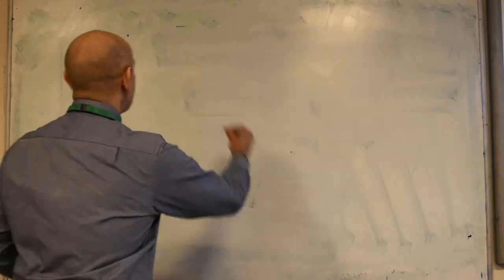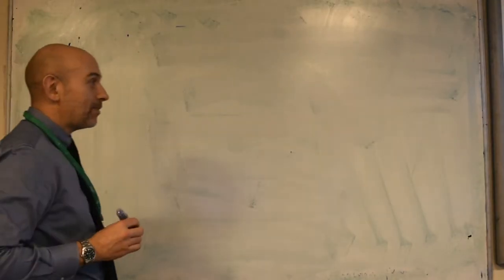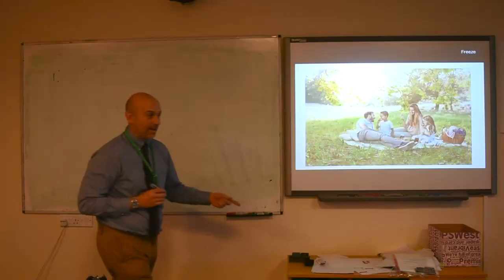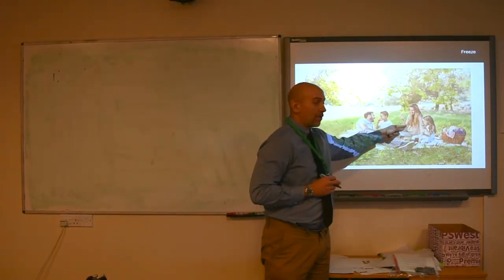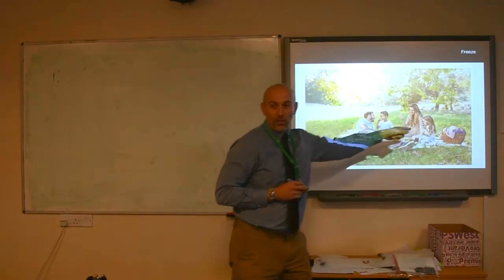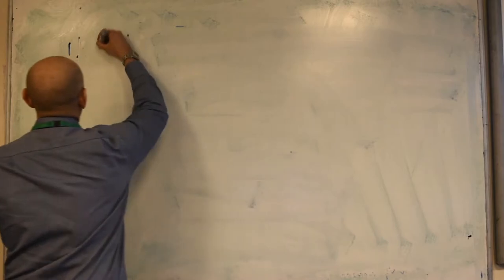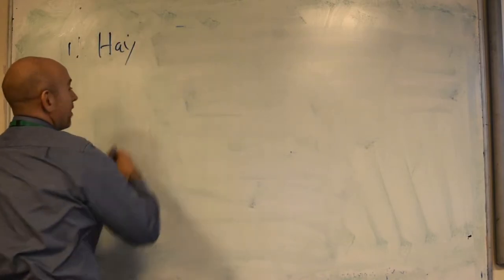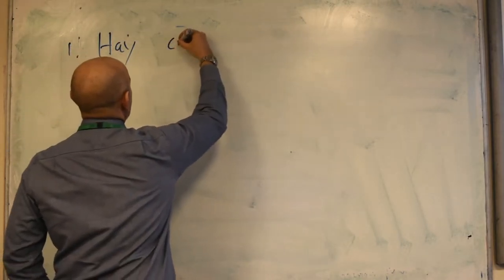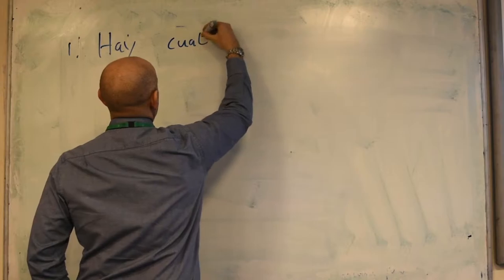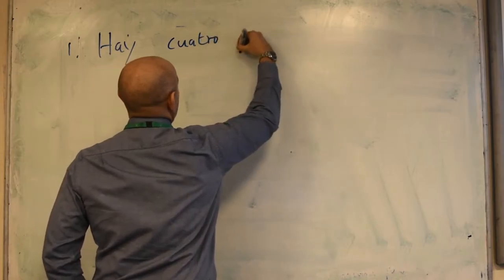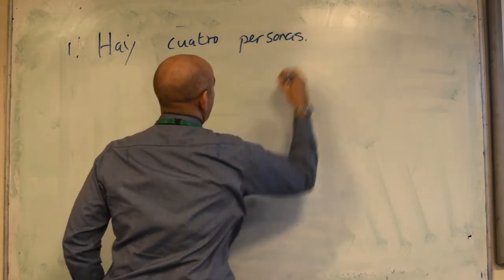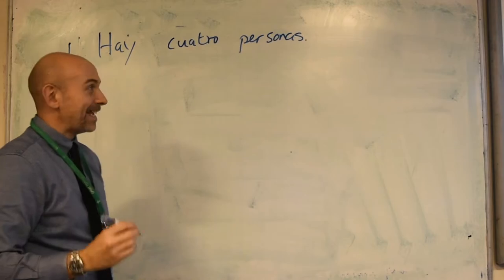The first sentence should always be how many people are in the photo. There are one, two, three, four people. So we start with 'hay' — there is or there are — 'cuatro personas'. First sentence, easy.